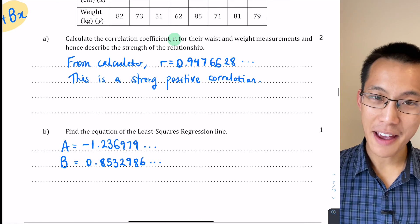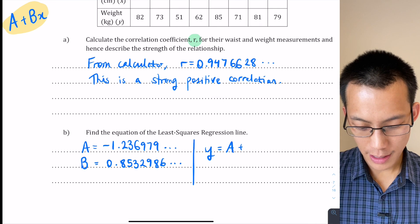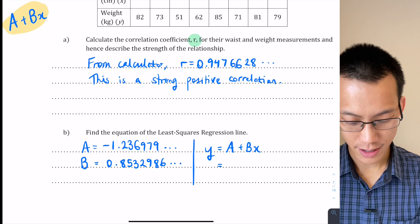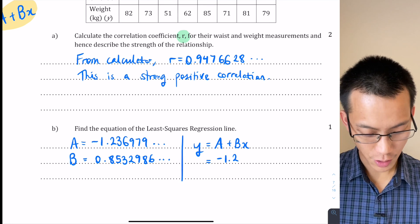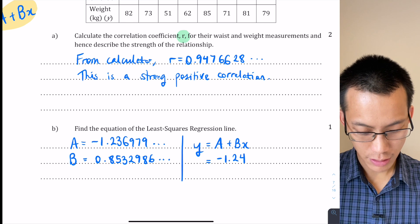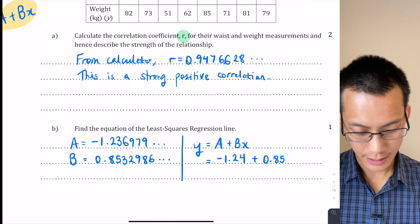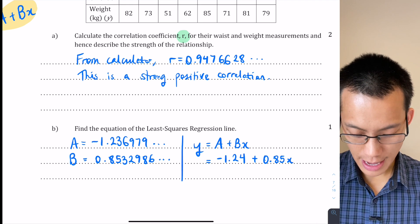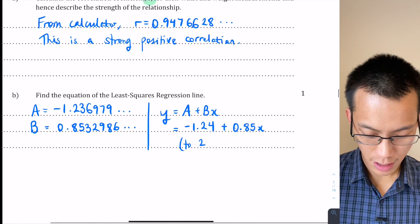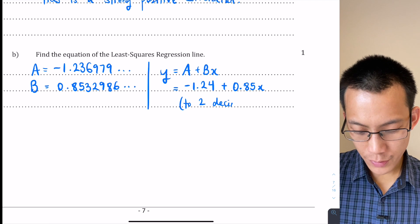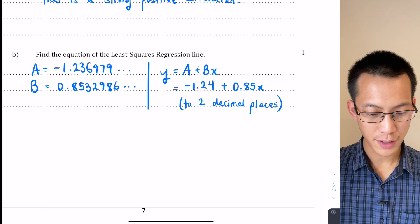Now I take that and I put it into my equation which I said from the beginning was A plus BX. That's what the calculator used. So I'm just going to put these in. Negative 1.2, I'm going to round it off there to two decimal places and then I'm going to add 0.85 and that just rounds down to five. So X to two decimal places. Whoops, just changed the page there by accident. There we go.